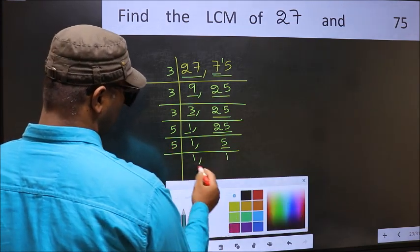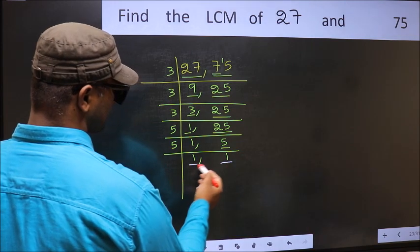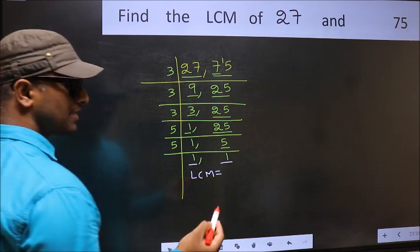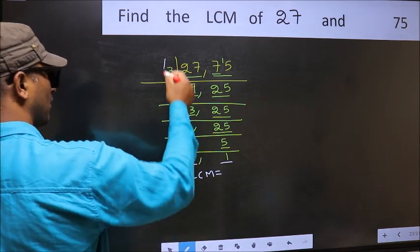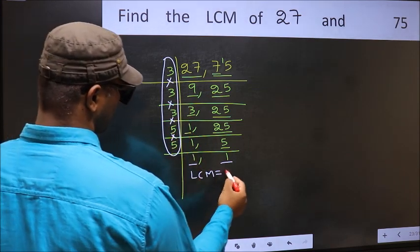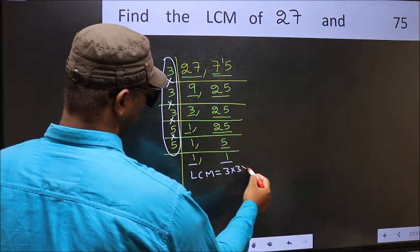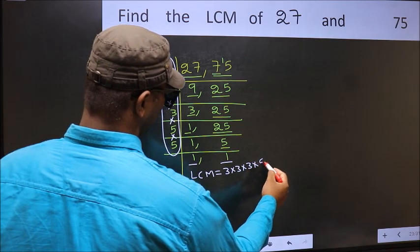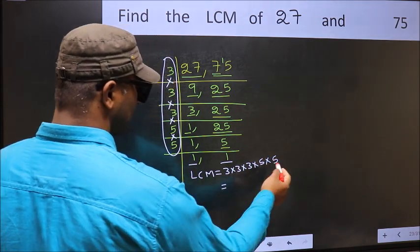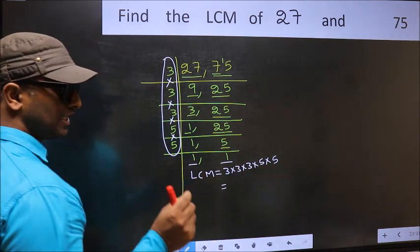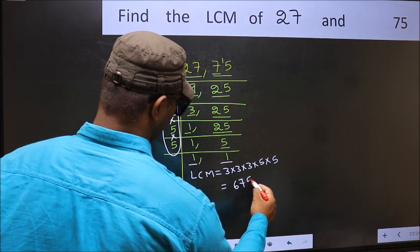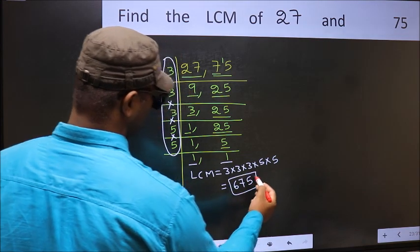We got 1 in both places, so our LCM is the product of all these divisors. That is 3 times 3 times 3 times 3 times 5 times 5. When we multiply these numbers, we get 675. So 675 is our LCM.